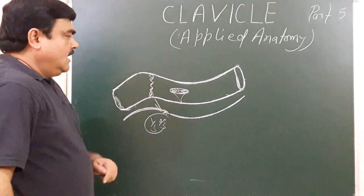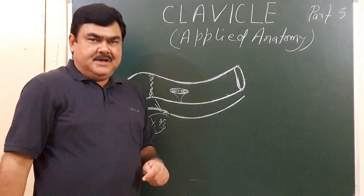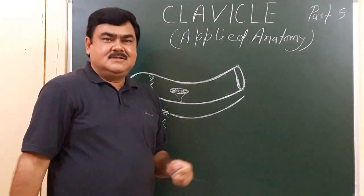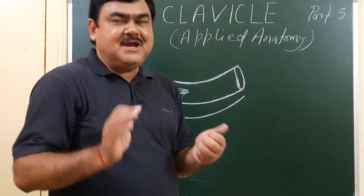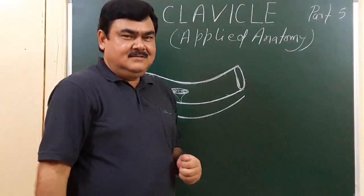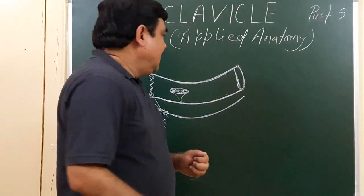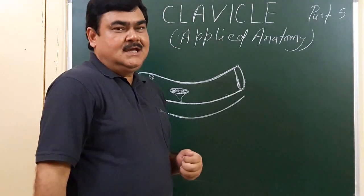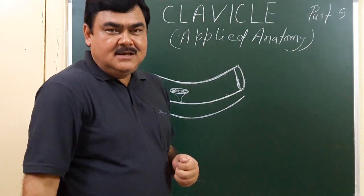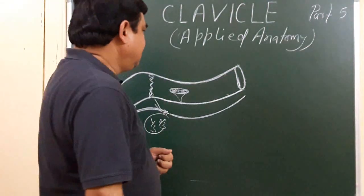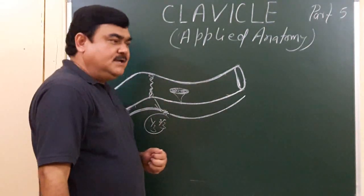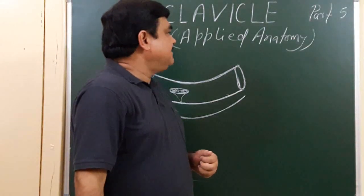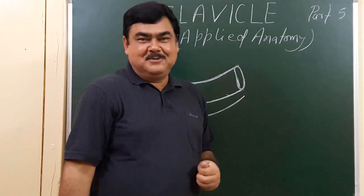An important thing — in some cases this clavicle is congenitally absent or incomplete in development. This condition is known as cleidocranial dysostosis. So this is the applied aspect of the clavicle. Thank you.